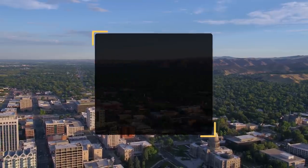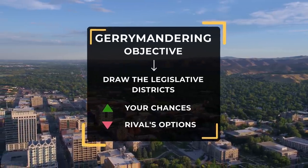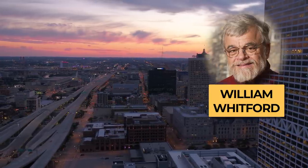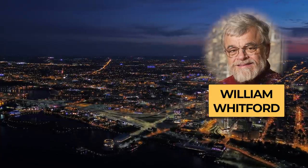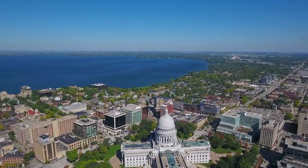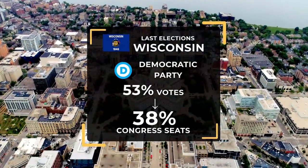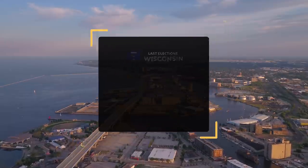The goal of gerrymandering is very simple: draw a legislative district maximizing your chances while minimizing your opponent's options. One person trying to stop it is William Whitford, a law professor at the University of Wisconsin, who denounces the gerrymandering practiced by Republicans in his state. In the last elections, the Democratic Party won 53% of the votes but only got 38% of the Congress seats.